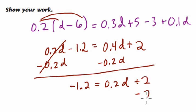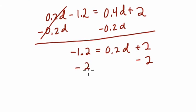And now I get d by itself, by subtracting 2 on both sides. Negative 1.2 minus 2. That's negative 3.2. And that equals these 2's cancel out. 2 minus 2 is 0. 0.2d.